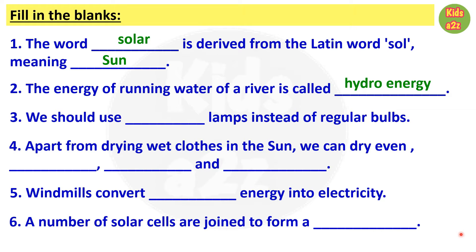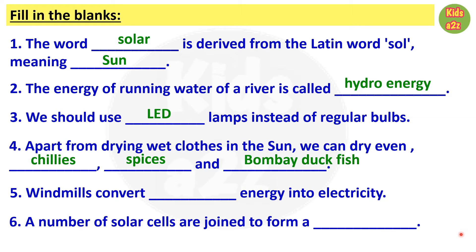Question 3: We should use LED lamps instead of regular bulbs. Number 4: Apart from drying wet clothes in the sun, we can dry even chillies, spices, and Bombay duck fish. Question 5: Windmills convert wind energy into electricity. Question 6: A number of solar cells are joined to form a solar panel.